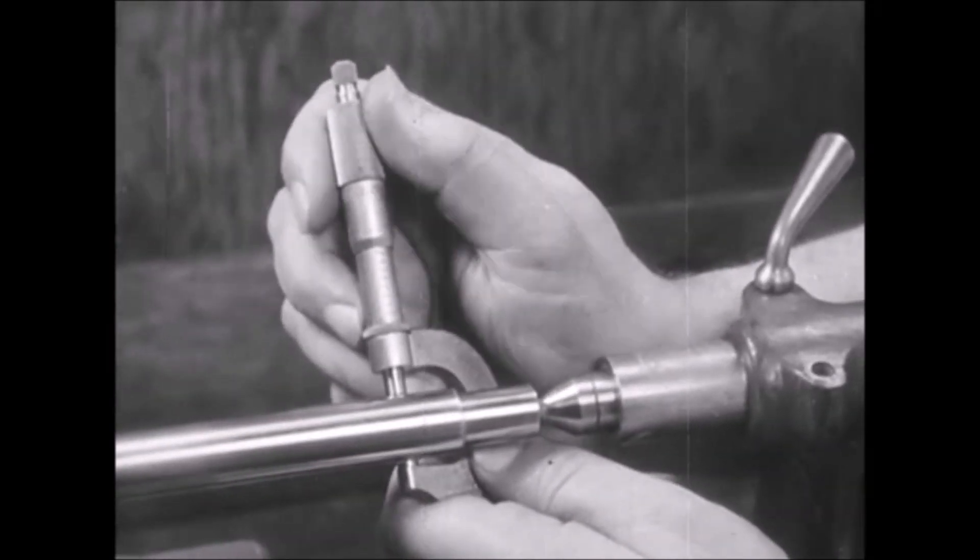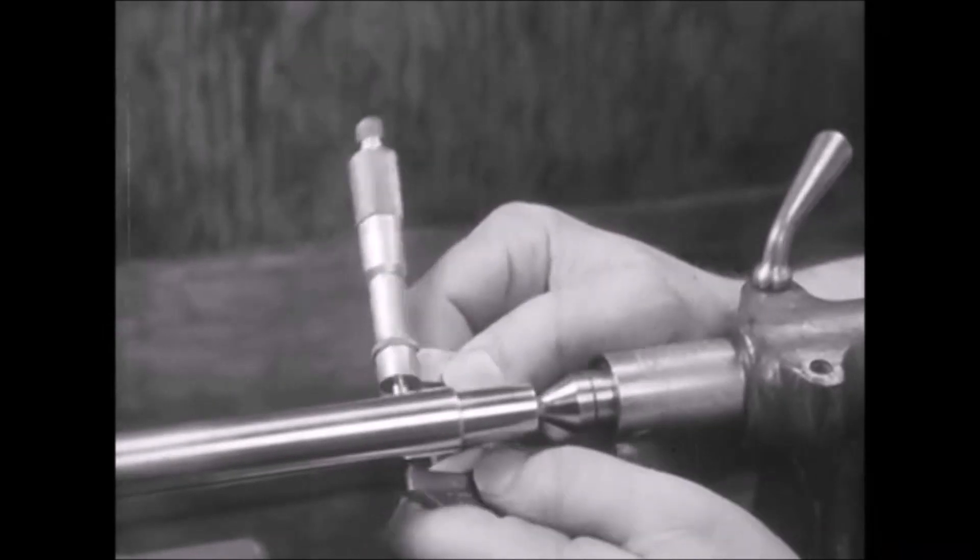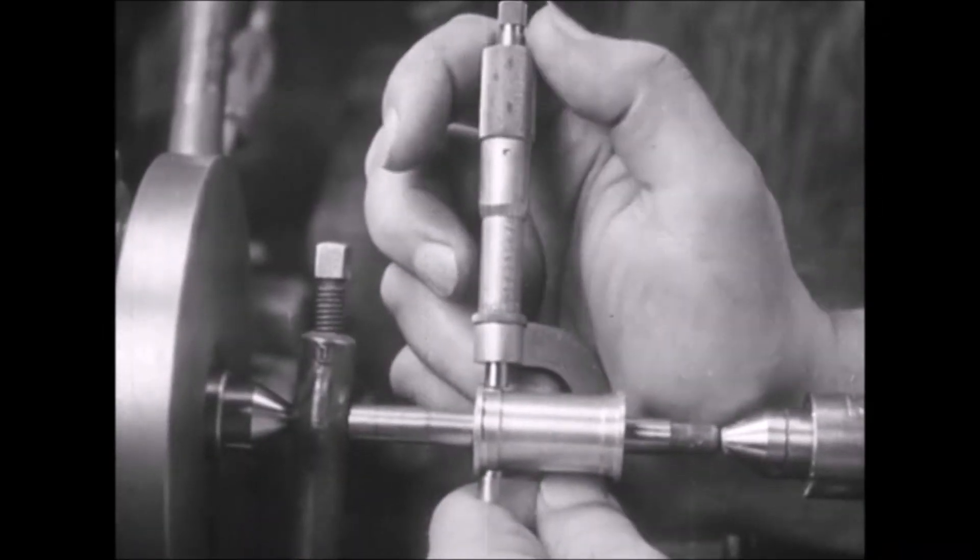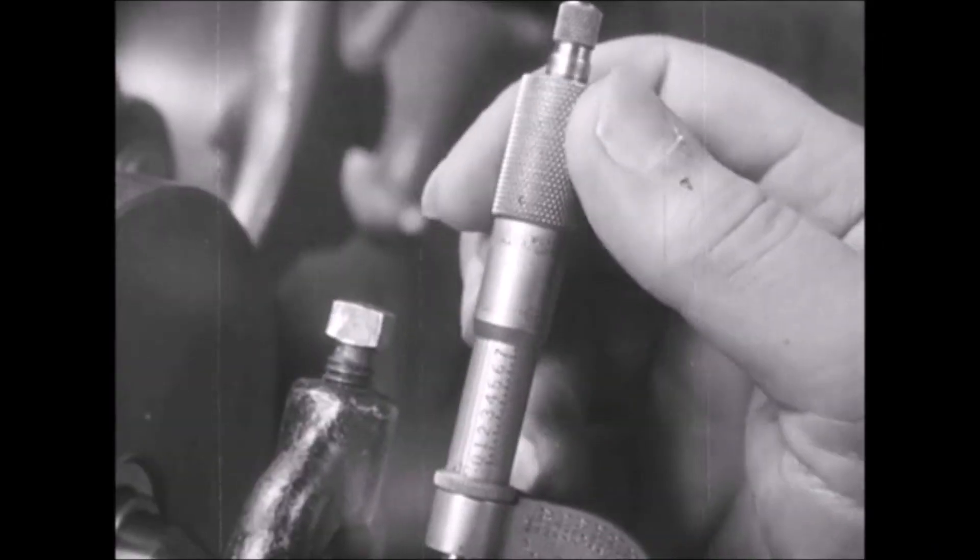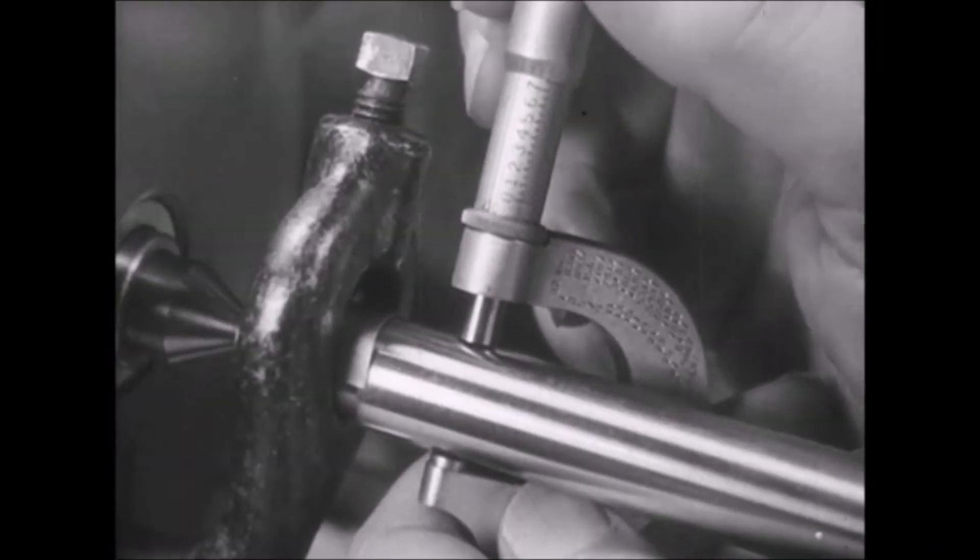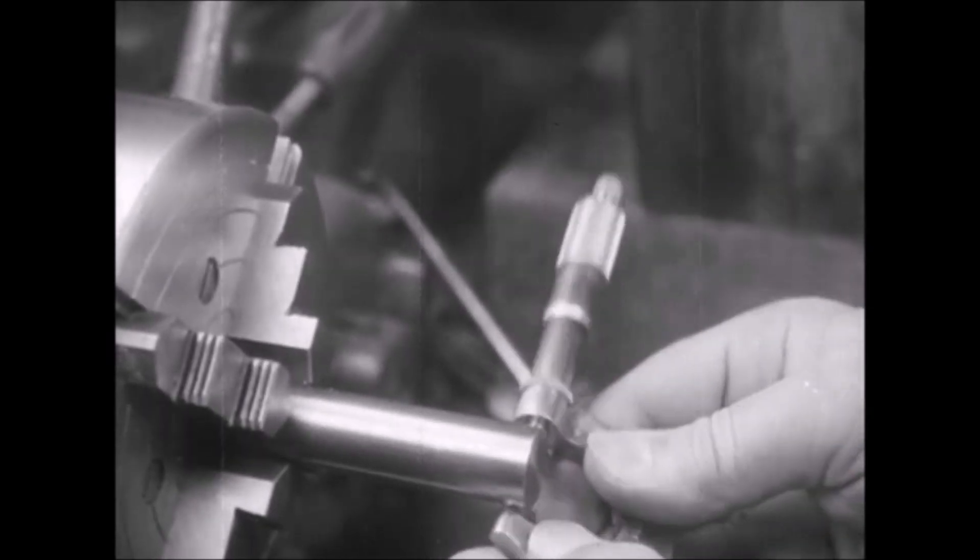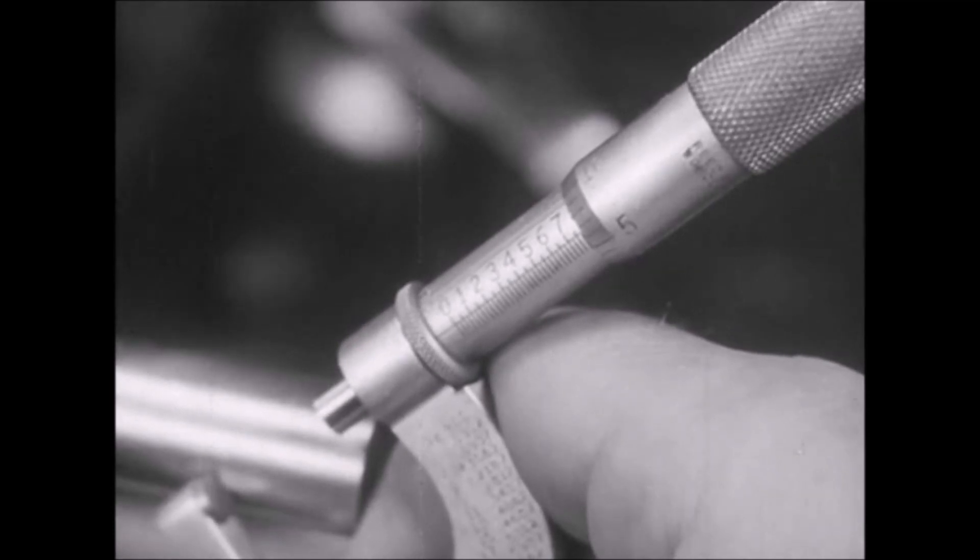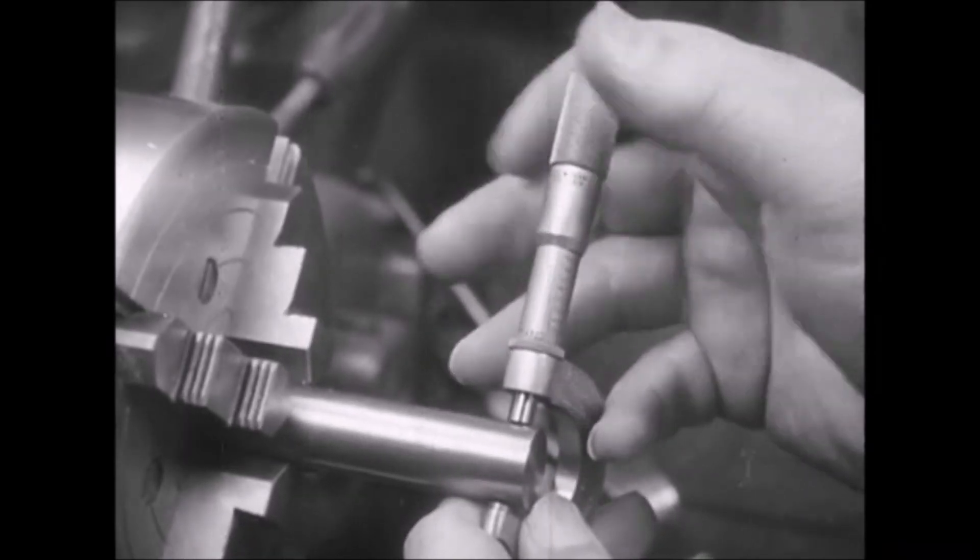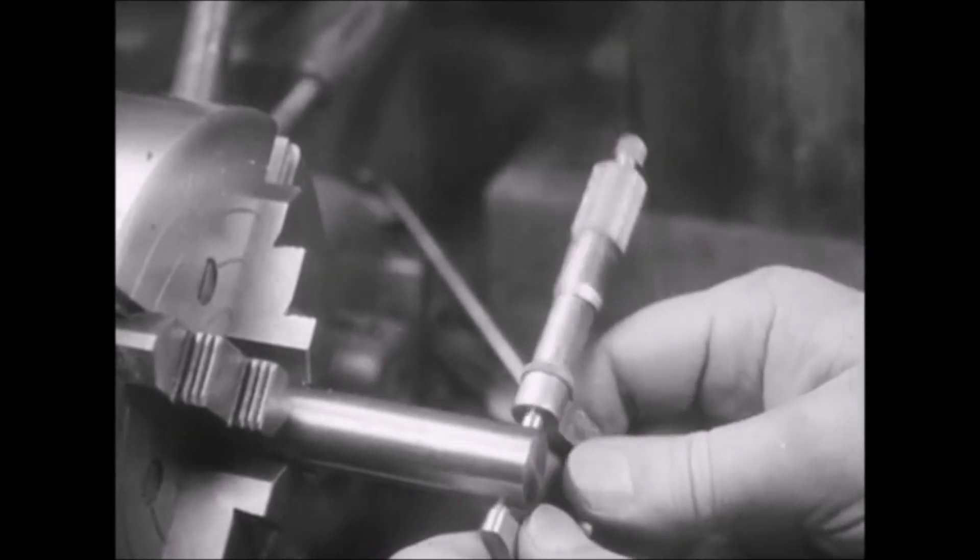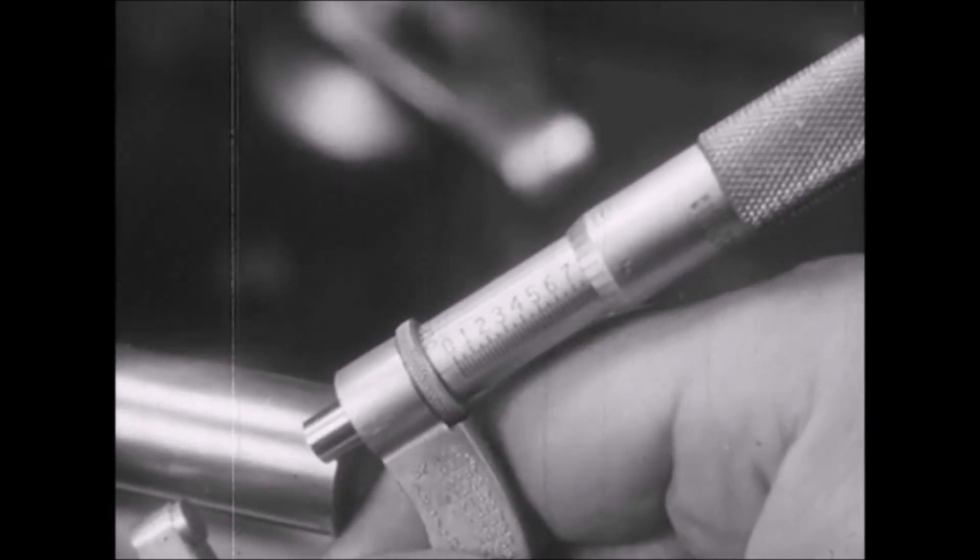The ability to take accurate measurements with a micrometer depends on skill in its use. There is a feel to a micrometer that tells the skilled workman when he is using the right pressure in turning the thimble. Precise measurement can result only through proper use of the micrometer, and constant practice is the only way to acquire the necessary skill to acquire the right feel. Until the operator is skilled in the use of the micrometer, he may measure the same piece at the same point and get different readings. Constant practice will develop the skill necessary to obtain uniform readings.